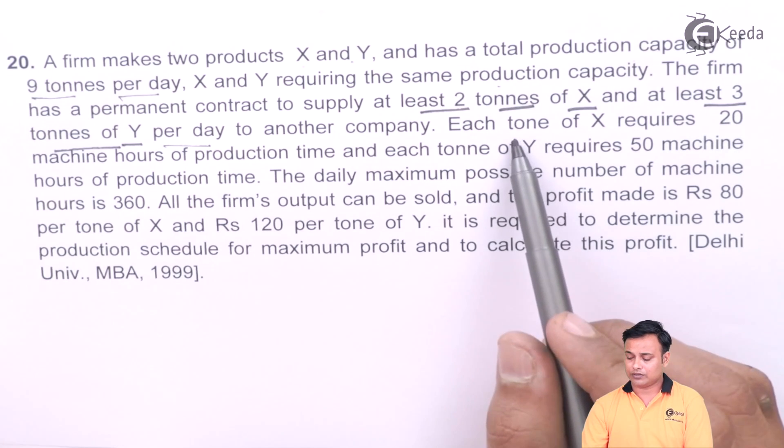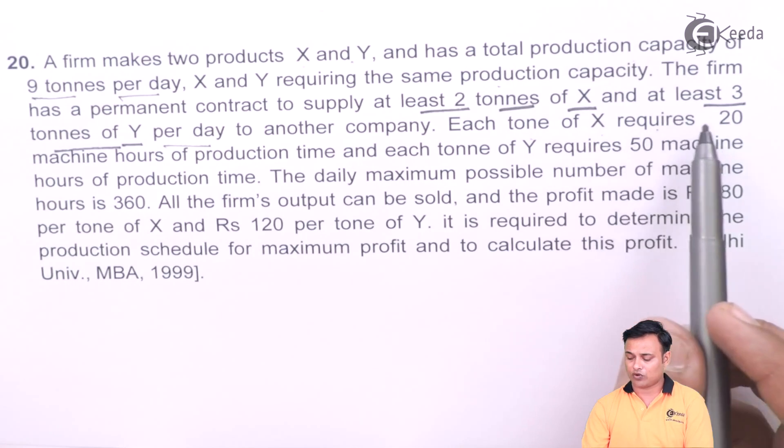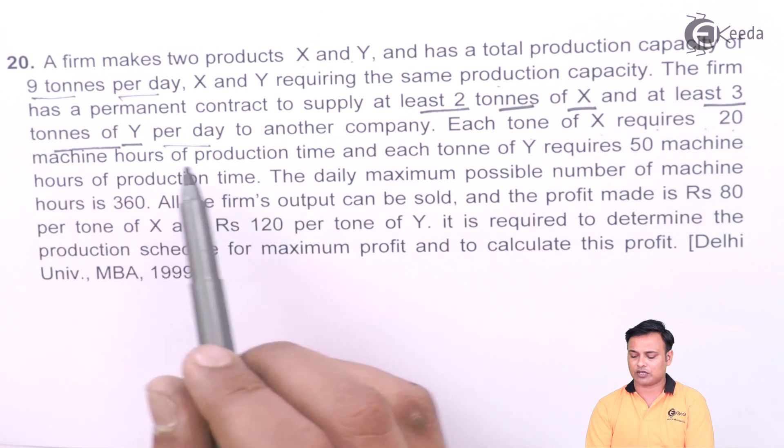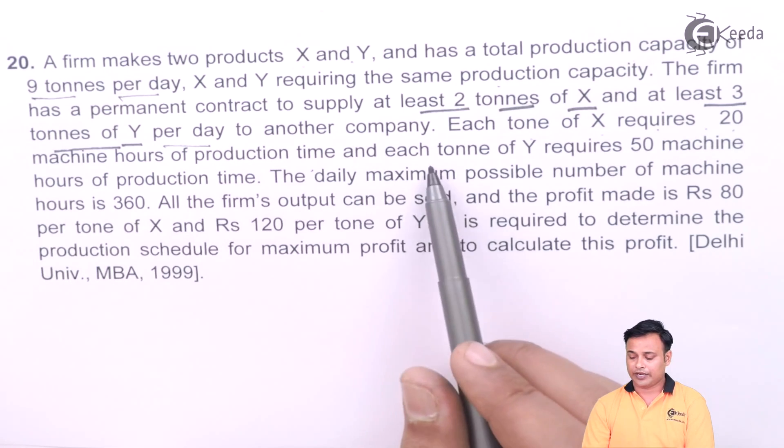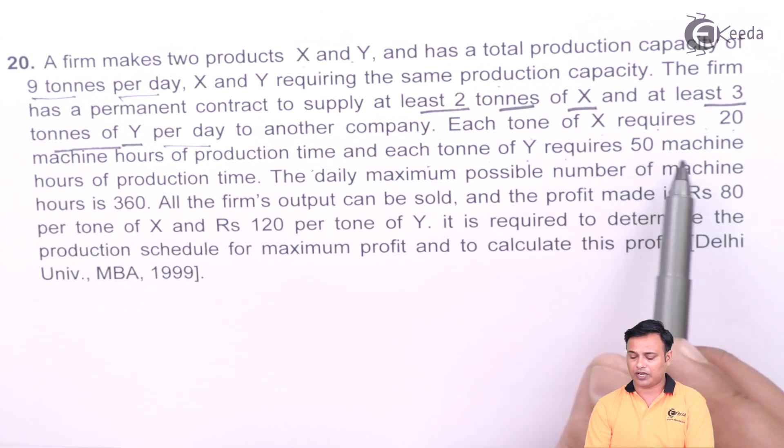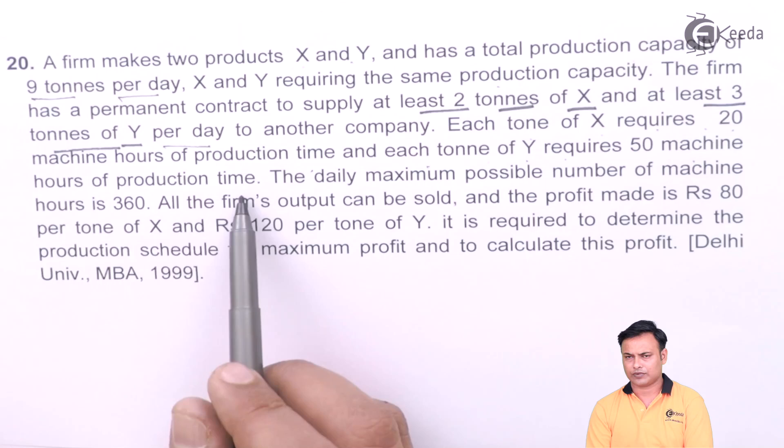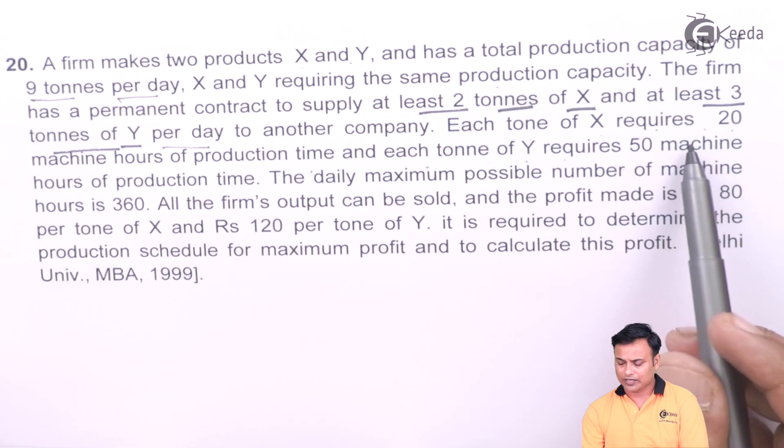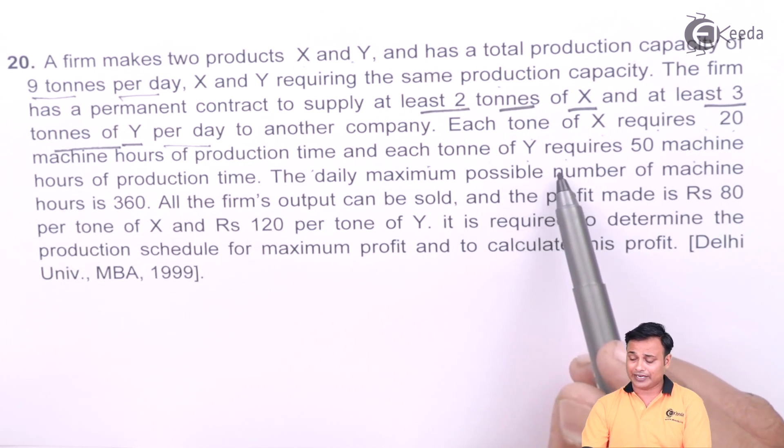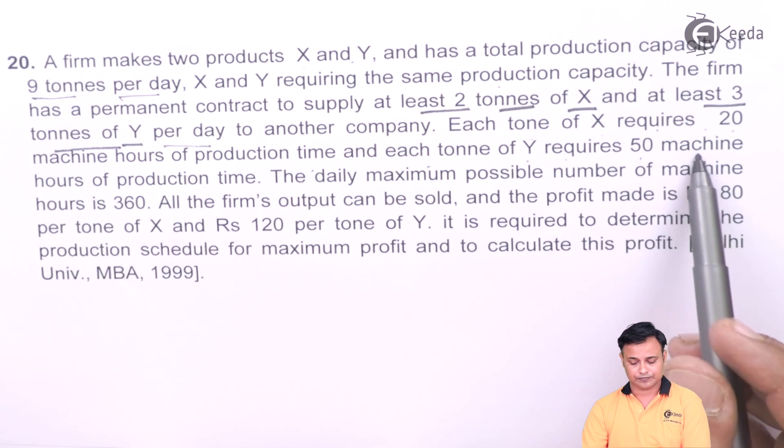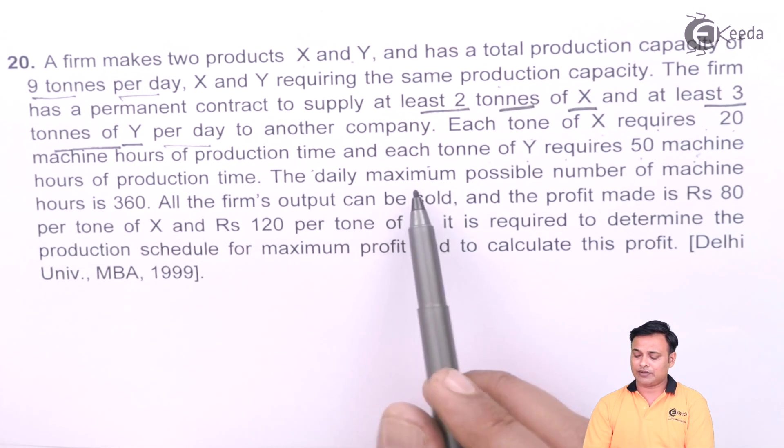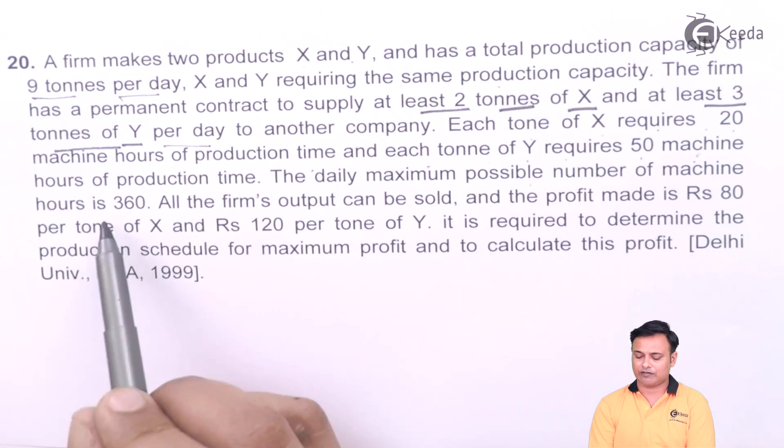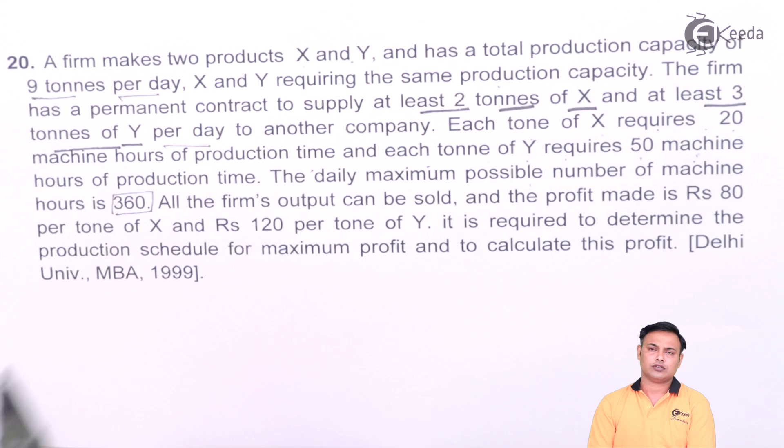Then each ton of X requires 20 machine hours of production time and each ton of Y requires 50 machine hours of production time. The daily maximum possible number of machine hours is 360. So the maximum machine hours available to us is 360.